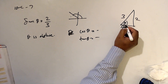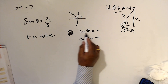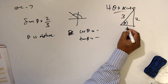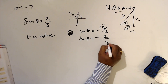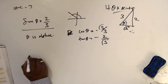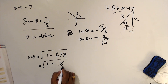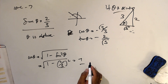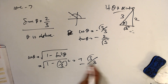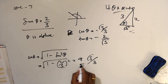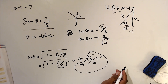If θ is acute, cos θ = √5/3 and tan θ = 2/√5. Or you can use the identity: cos θ = ±√(1 - sin²θ) = ±√(1 - (2/3)²) = ±√5/3. Since θ is obtuse, cos θ must be negative: cos θ = -√5/3.